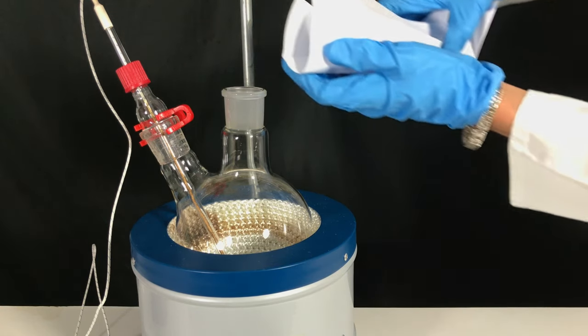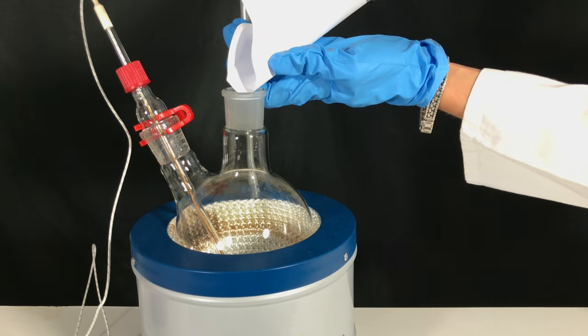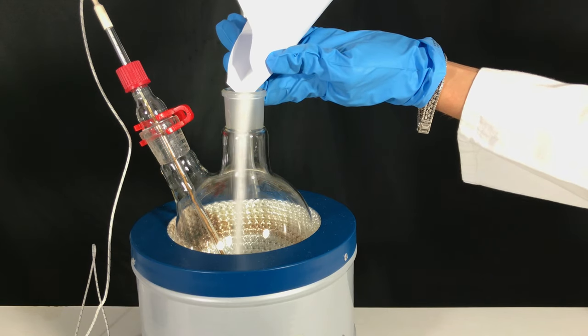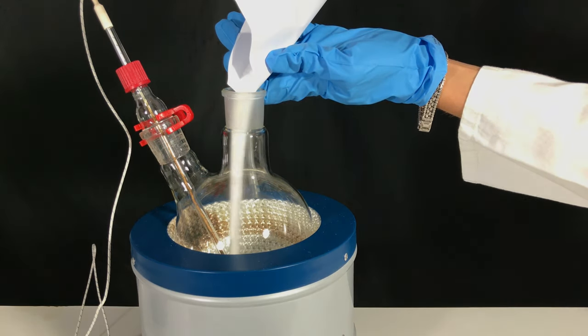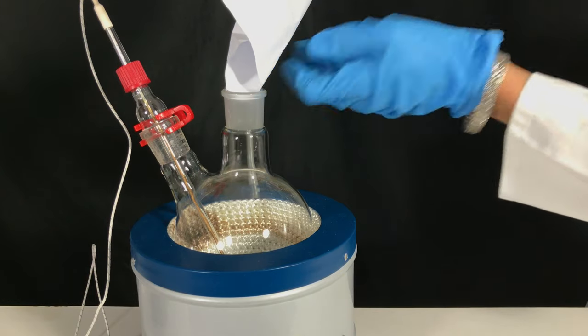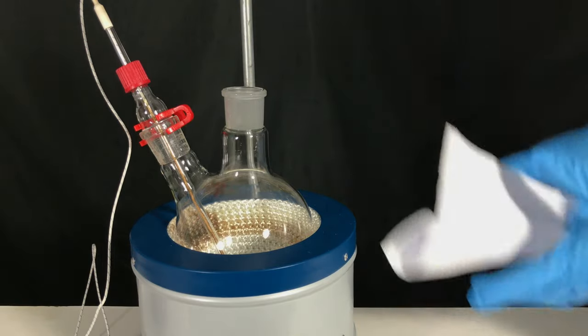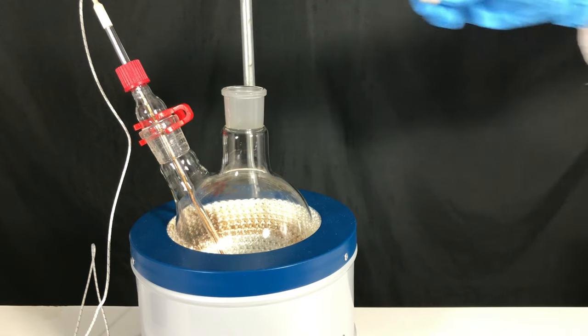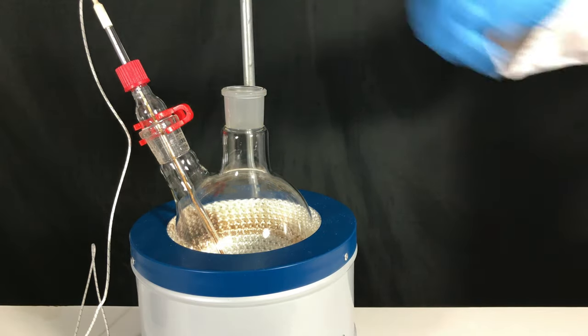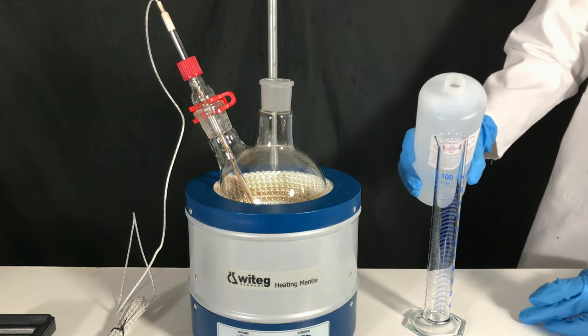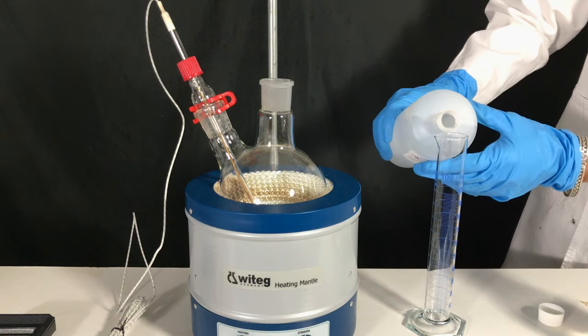We start off by adding all of the boric acid to a 1 liter round bottom flask. A magnetic stir bar is dropped in. Afterwards, 200 ml of methanol are measured out and added.